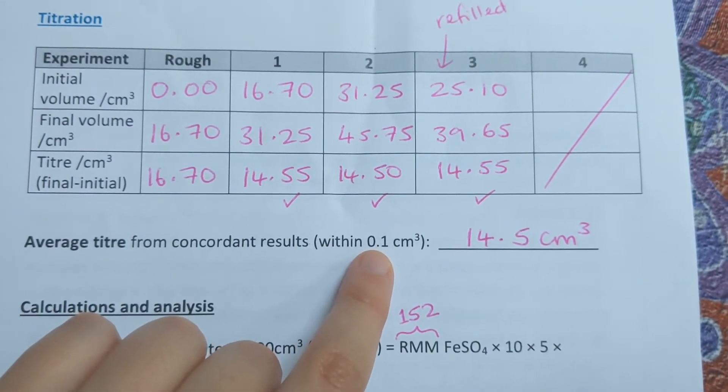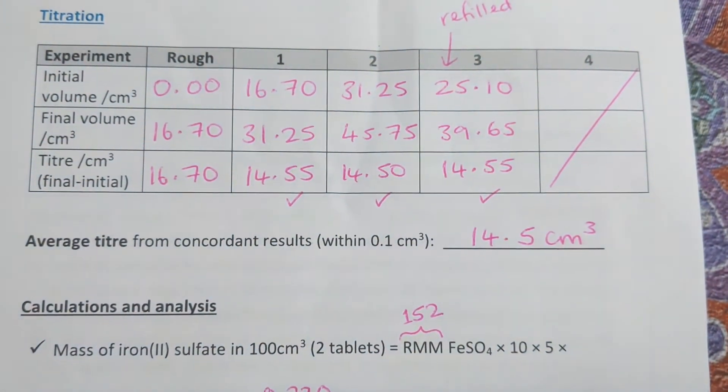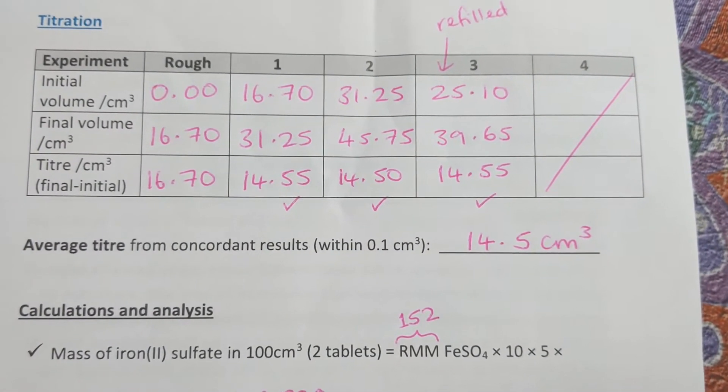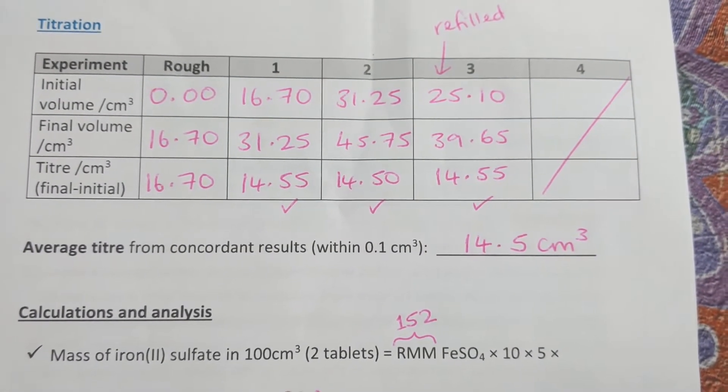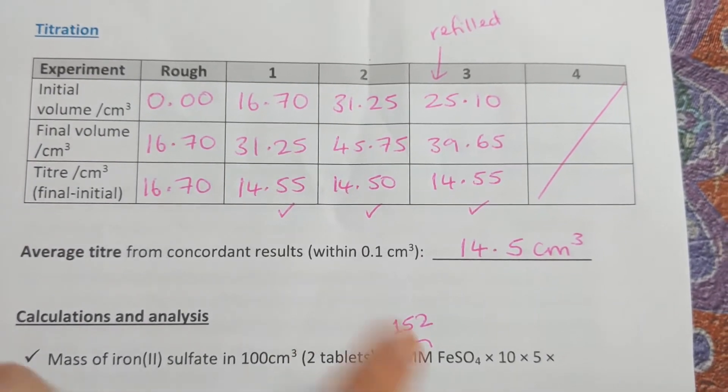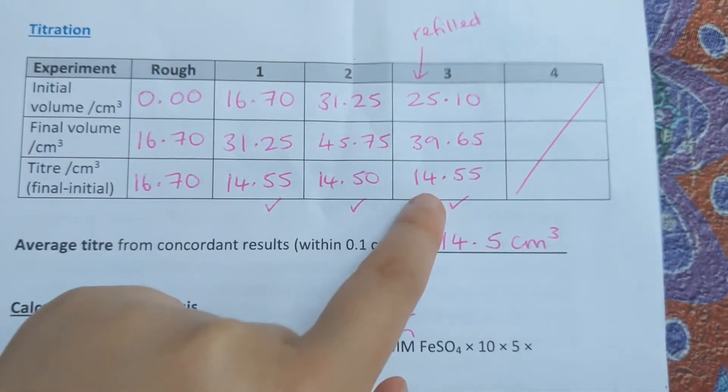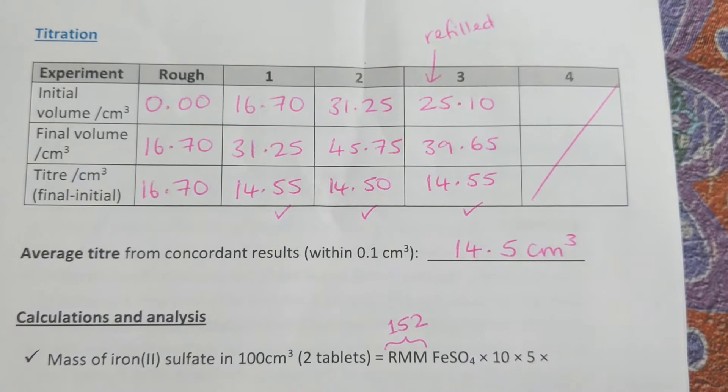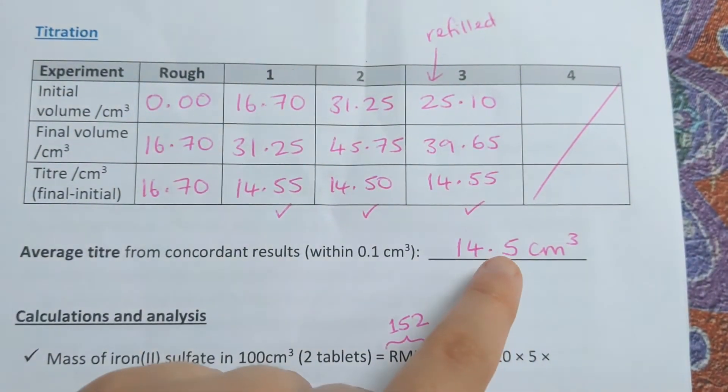Ideally we want to get titers within 0.05 cm³ of each other—the closer, the more precise, the better. I'm going to use these three titers to calculate the average.